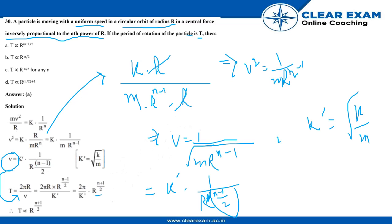And also this term 2 pi by k dash is here. So we can see by the proportionality that T is proportional to r raised to power n plus 1 by 2. And if we look closely, this is the correct answer.